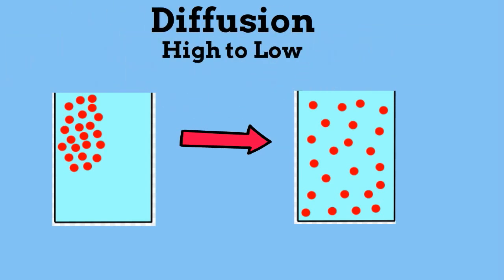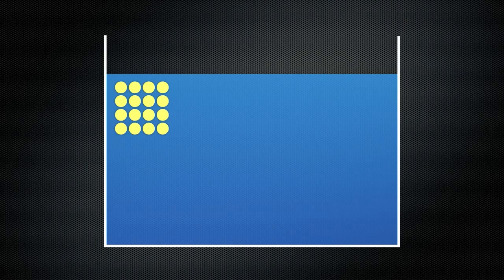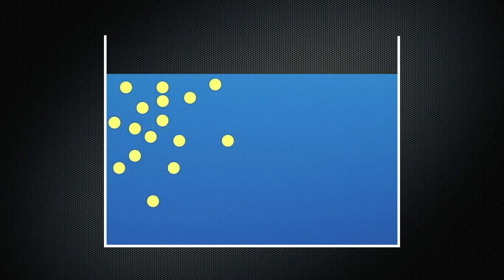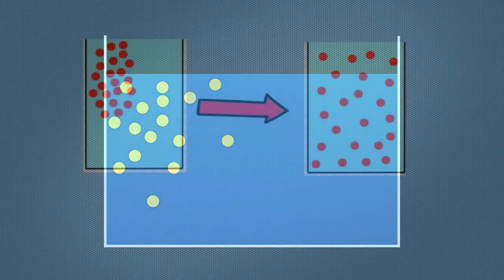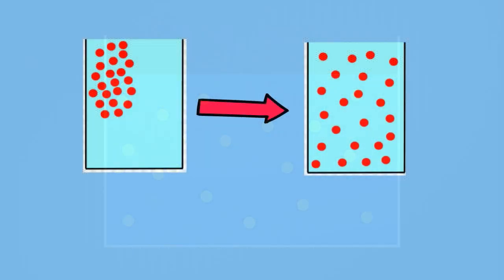Check out this example of diffusion. You can see another simple example of diffusion when you watch the food coloring diffuse into the water.